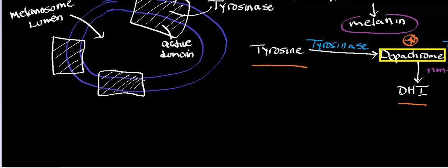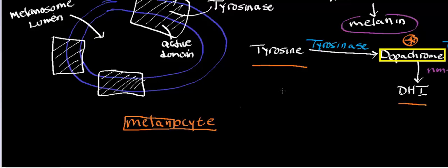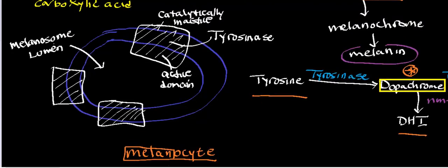All of these processes occur in a specialized cell in your skin called a melanocyte. Melanocytes are specialized cells that synthesize melanin — hence the 'melan' in their name. There's a special organelle inside melanocytes that does this called a melanosome. We've discussed two main types of melanin: pheomelanin and eumelanin. Therefore there are different types of melanosomes — a eumelanosome that synthesizes eumelanin, and a pheomelanosome that synthesizes pheomelanin. The actual melanin and melanin monomer synthesis occurs inside the melanocyte lumen, the central region of the melanosome.